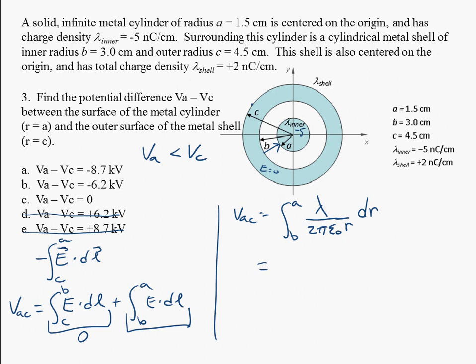So the result here is this is just going to be lambda inner divided by 2 pi epsilon naught. The integral of 1 over R is just equal to the log of R. We're going to evaluate it between B and A.